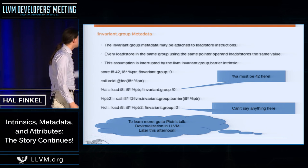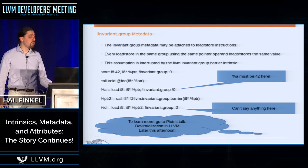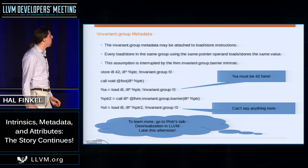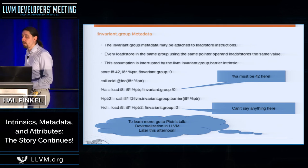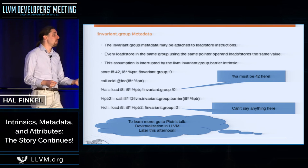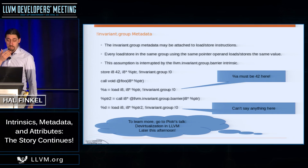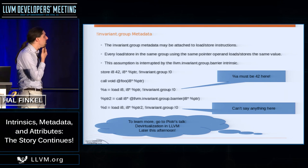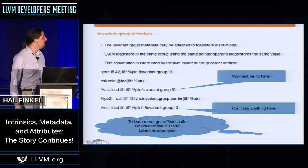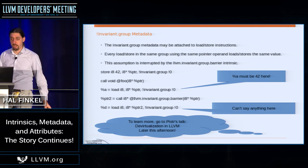Another recently-added metadata is 'invariant.group' metadata, along with an associated intrinsic called an invariant group barrier. This provides a kind of restricted invariance region for memory values: if you have a pointer with multiple loads and stores sharing the same group tag, the value in that memory doesn't change. The specific motivation was devirtualization. There's a talk later today on devirtualization in LLVM that will cover this feature in much more detail.